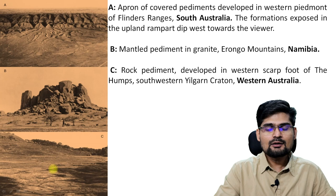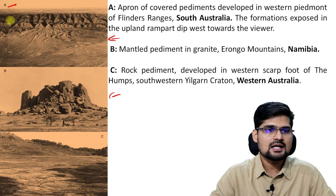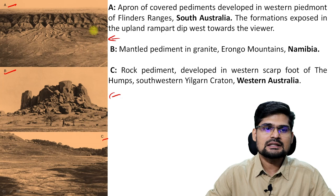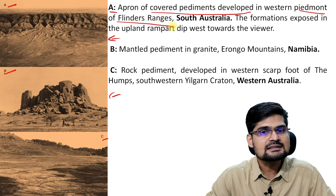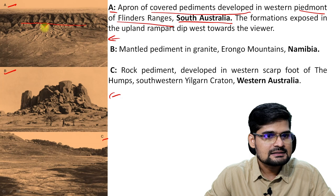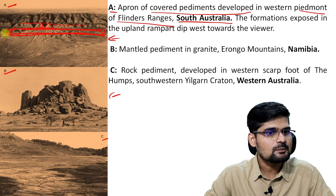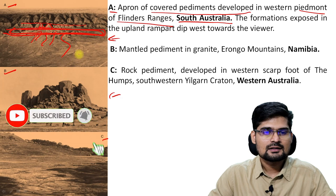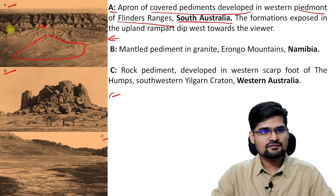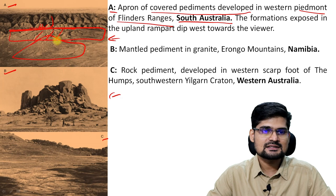Now look at this particular image. You have three images: image A, image B, and image C, which provide more clarity on the development of pediments. In image A you see an apron of covered pediments developed in the western piedmont of Flinders Ranges, southern Australia. This is the present surface, and this particular triangular structure at this base is the pediment. This is the entire pediplane, and you have rails and gullies. What you observe here are the alluvial fans and alluvial deposits — the first base at the foothills of these mountains — which is the erosional surface: pediments.